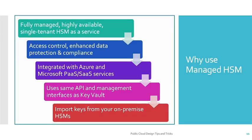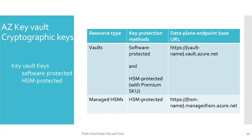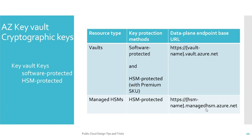Now let's understand Azure Key Vault cryptographic key protection methods. There are two types: software protected and HSM protected. Software protected means cryptographic operations are done over compute systems like virtual machines. HSM protected means cryptographic operations like encryption, decryption, and validation are done over your HSM module — they do not go outside the HSM module, making it highly secure. To distinguish the two types, the FQDN for Vault is vault.azure.net and for Managed HSM it is managedhsm.azure.net.